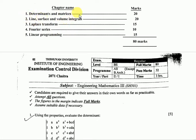Chapter 1 is determinants and matrices. Chapter 2 is line, surface, and volume integrals. Chapter 3 is Laplace transform. Chapter 4 is Fourier series. Chapter 5 is linear programming. The total marks are 80. This is just the pass marks - you need to pass the exam, so let's start the video.